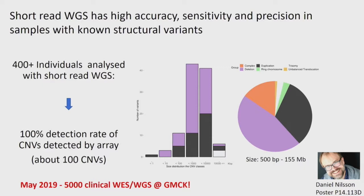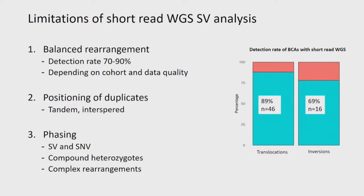There are some limitations of short-read SV analysis. Balanced rearrangements are a big problem when breakpoints are located in repetitive regions. For translocations and inversions, we're between 70 to 90 percent detection rate with short reads, depending on where the breakpoints are located. We also want to position duplicates — knowing where they are in the genome, which isn't always possible with short reads. We want to phase the SVs and SNVs, find compound heterozygotes, and phase complex rearrangements.